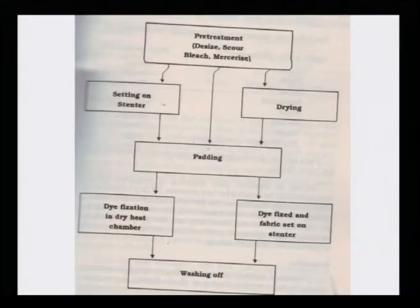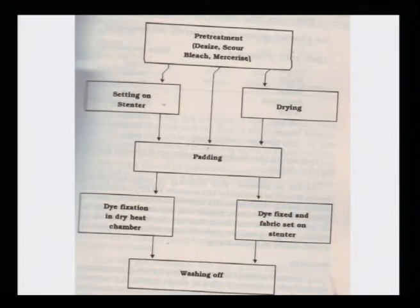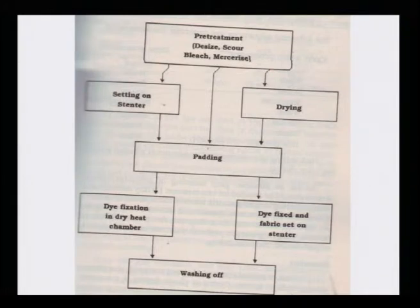The pretreated material passes through bleaching, desizing, scouring, and so on. Then through padding and then dye fixation in a dry heat chamber, and then finally the dye-fixed fabric is put into the stenter and then washed off. Putting it in the stenter actually helps it to get into the thermoplastic material.